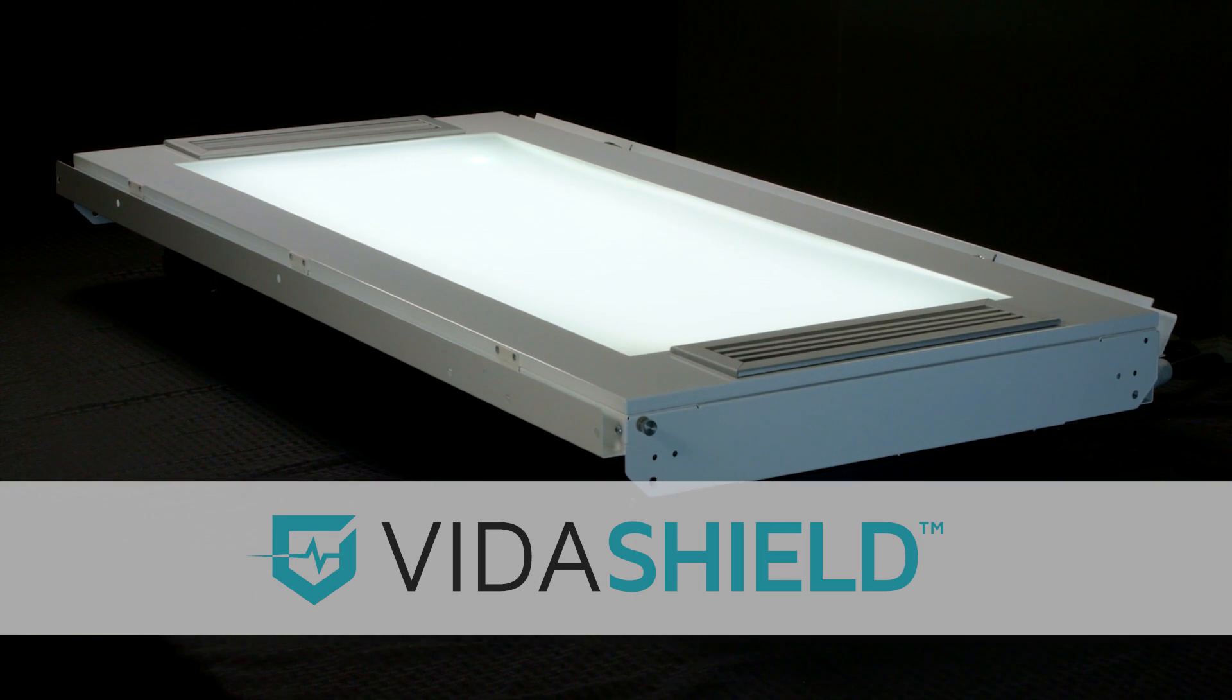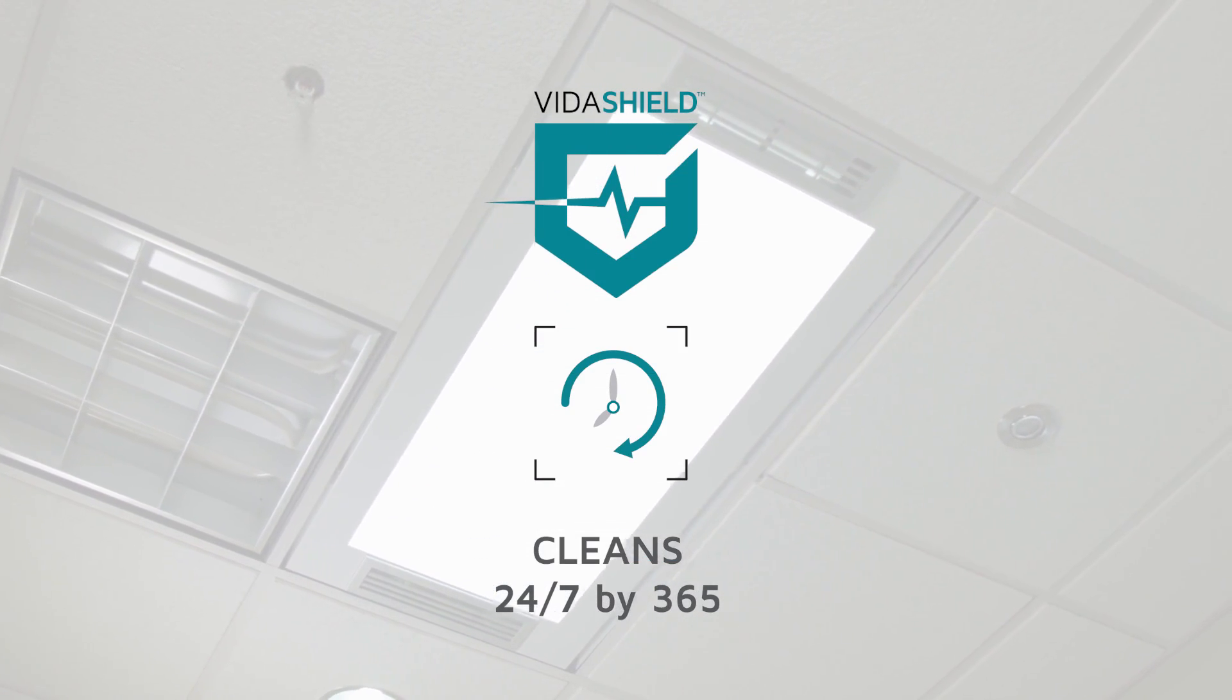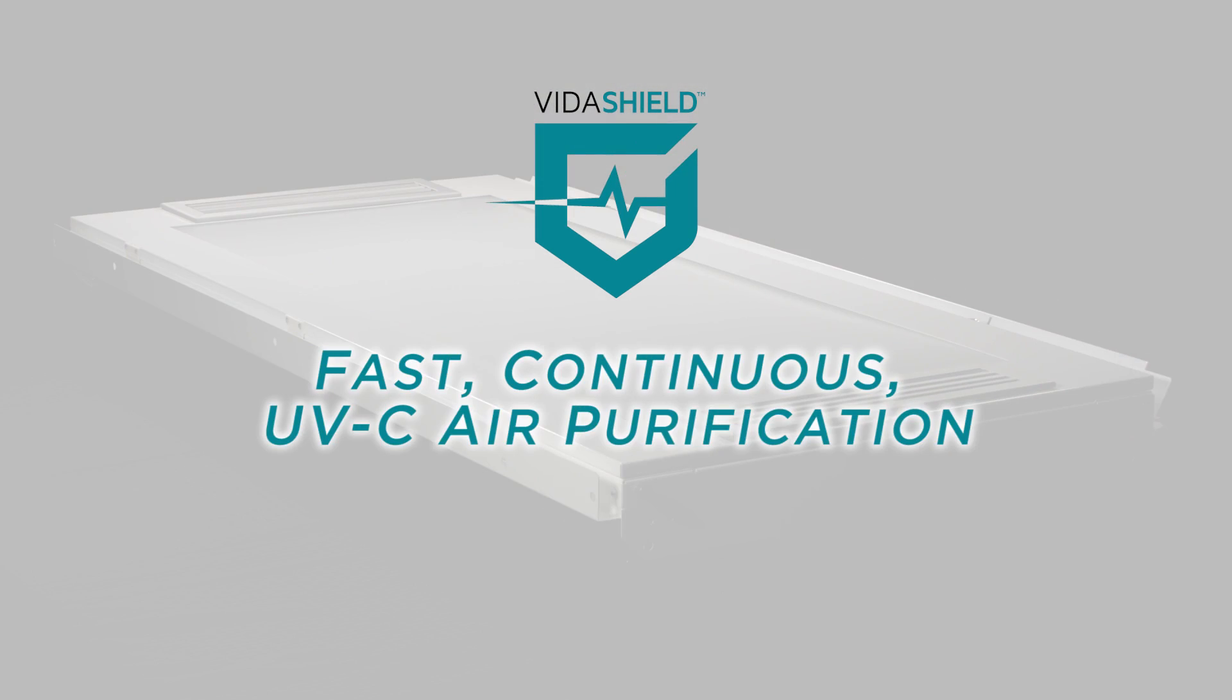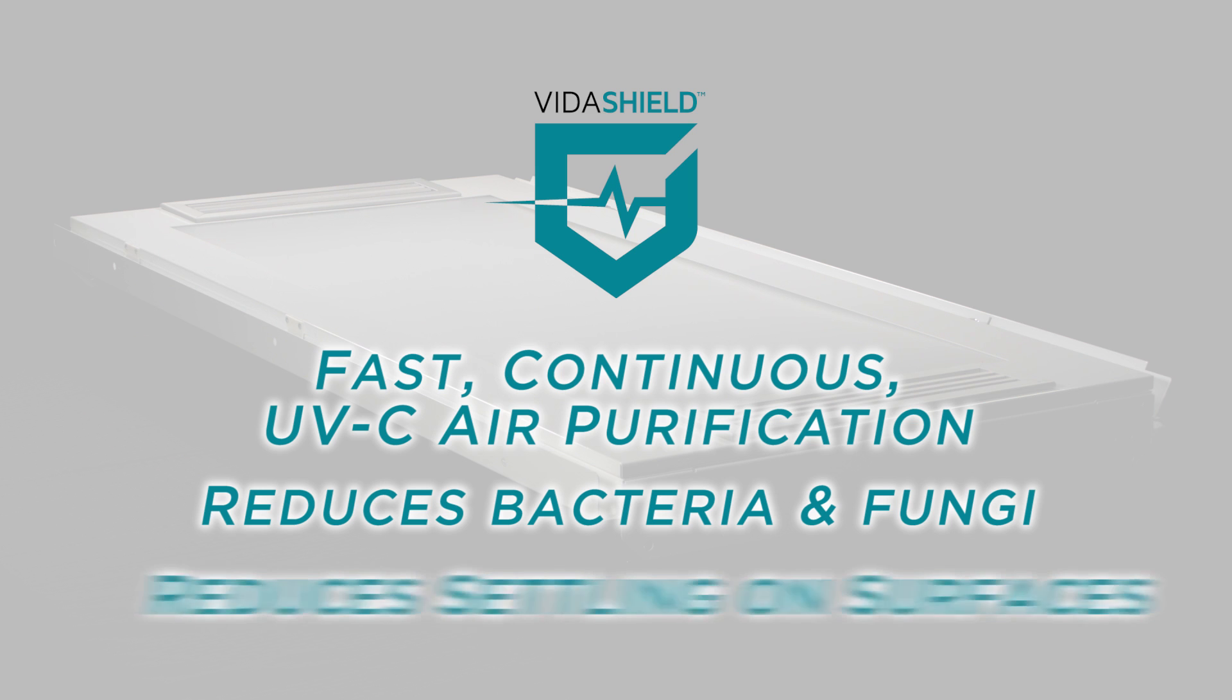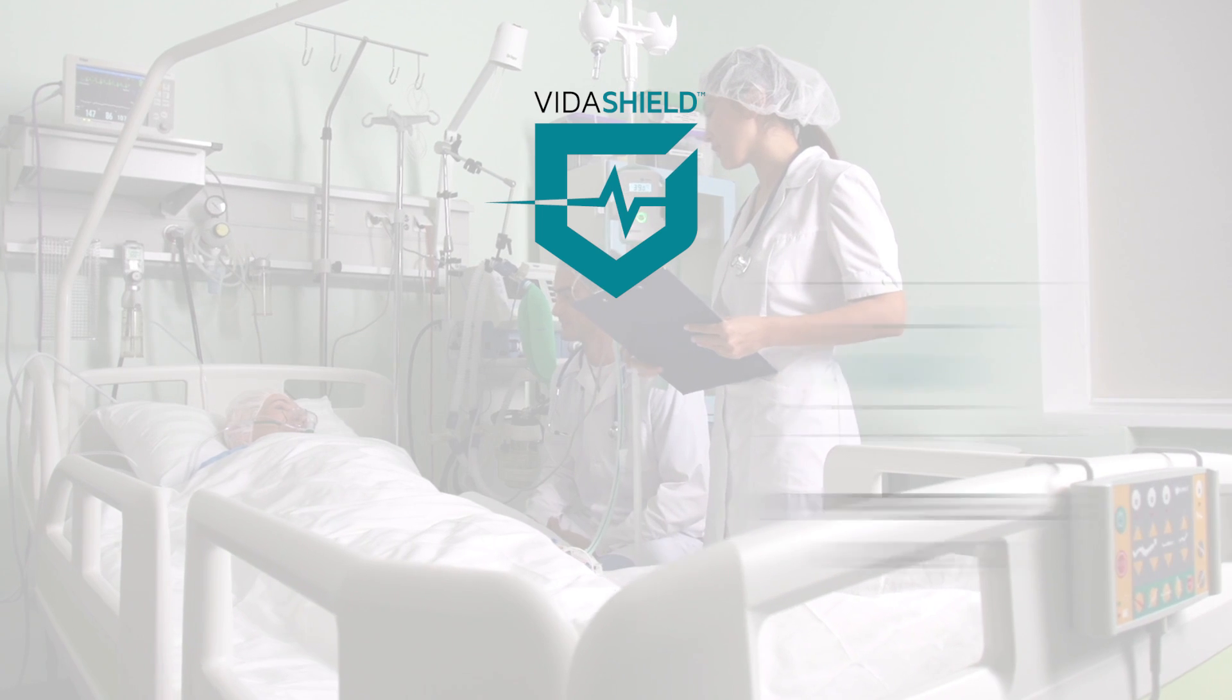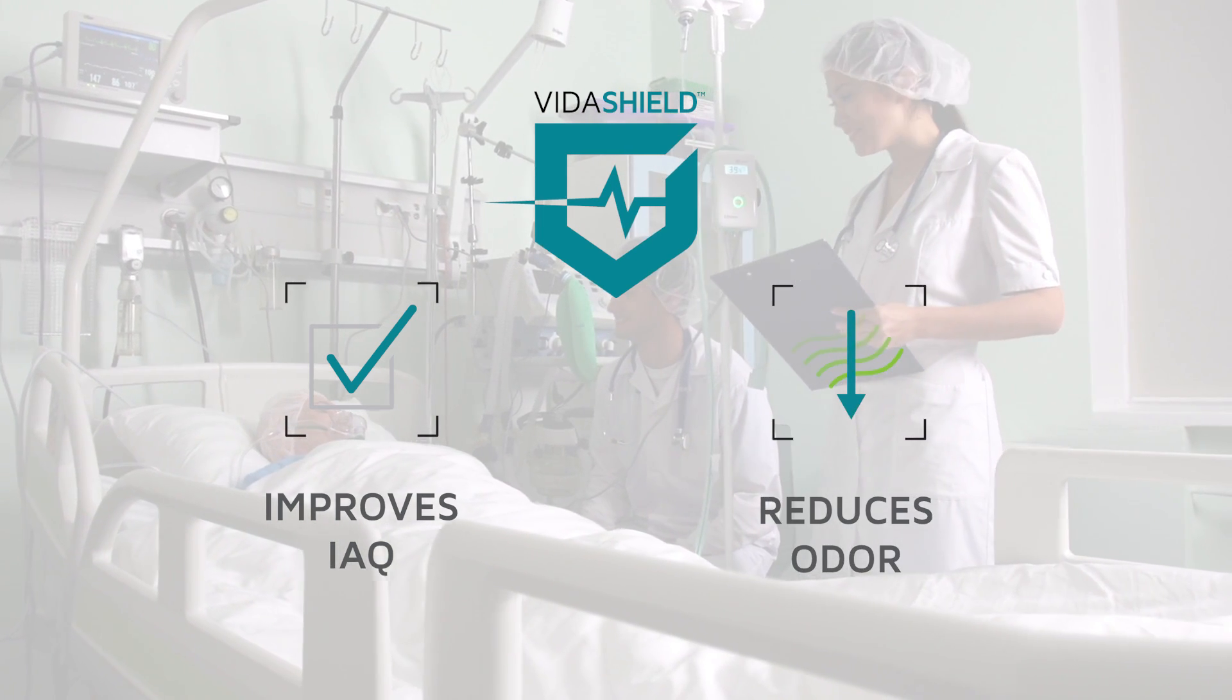That is exactly what makes VitaShield different. Operating 24-7, 365 in occupied spaces, VitaShield is a fast, continuous UVC air purification system that reduces the levels of bacteria and fungi in treated air, and reduces the settling of viable bacteria and fungi on surfaces. Health care staff have reported improved indoor air quality and reduced odors.